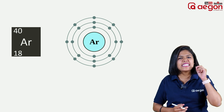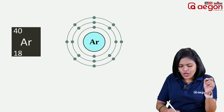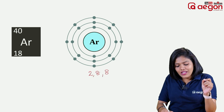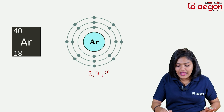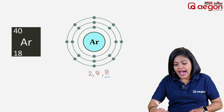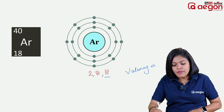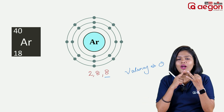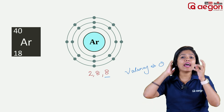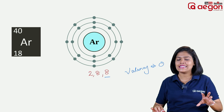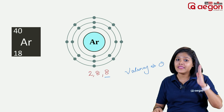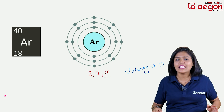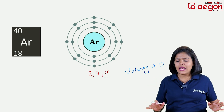Argon has atomic number 18. The electronic configuration is 2, 8, 8. The valency is zero. Helium, Neon, and Argon are noble gases — inert gases. They are already stable elements with complete shells, so they do not form chemical bonds. Their valency is 0.